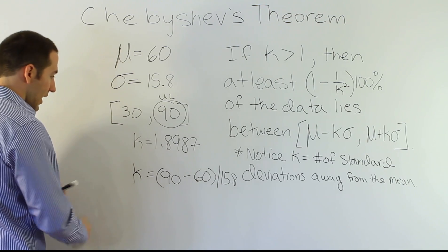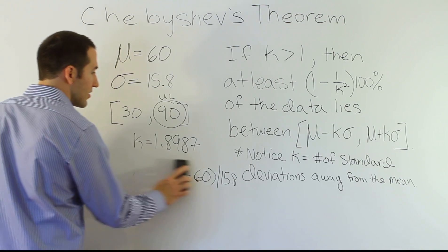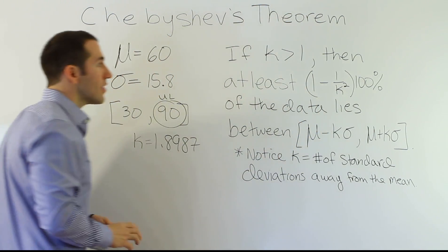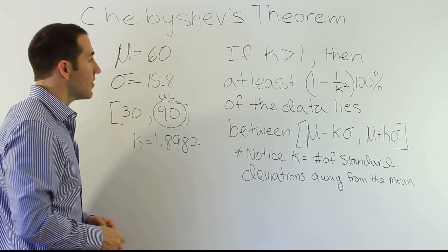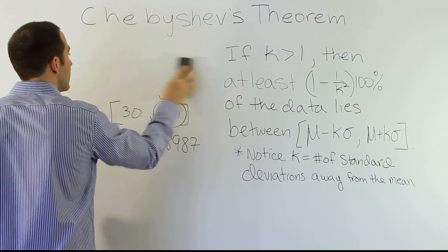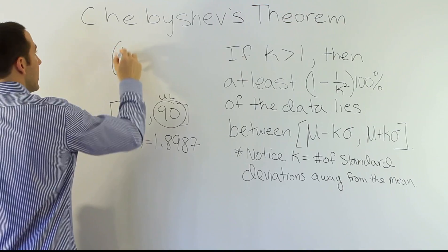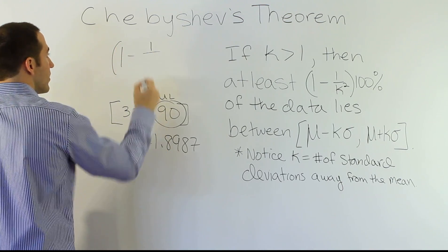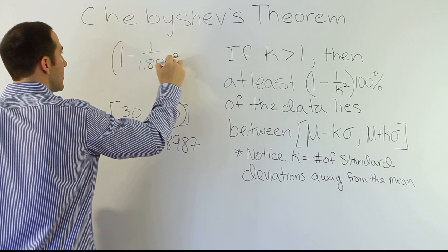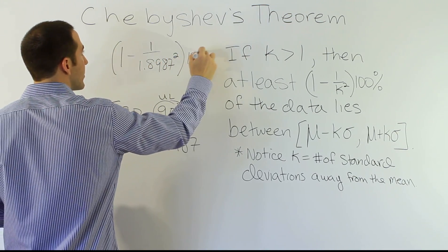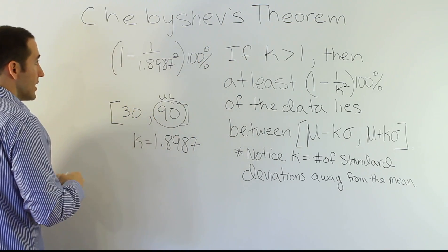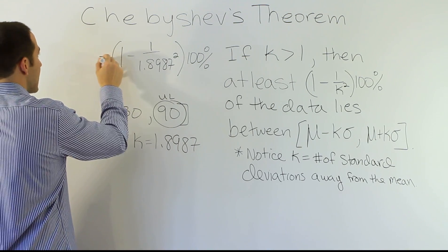Alright, now that we know our k, the next step of the process is going to be to take that k and plug it into this formula here to figure out the percentage that's located inside the interval. So, let's go ahead and do that then.